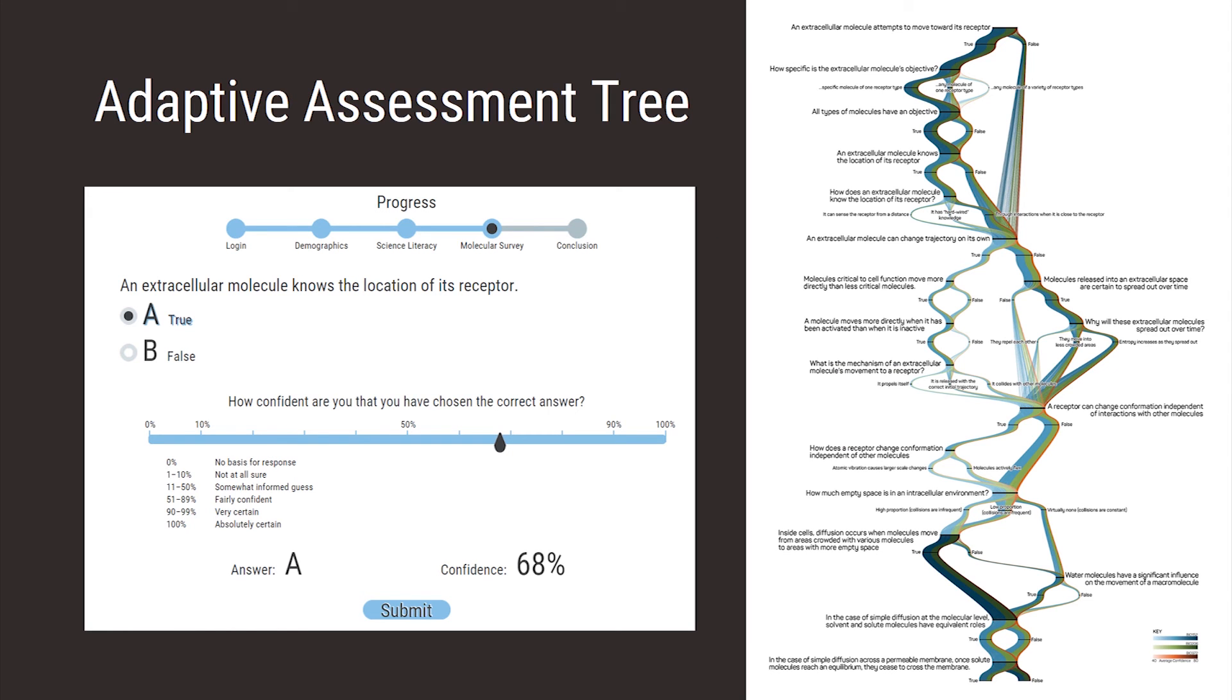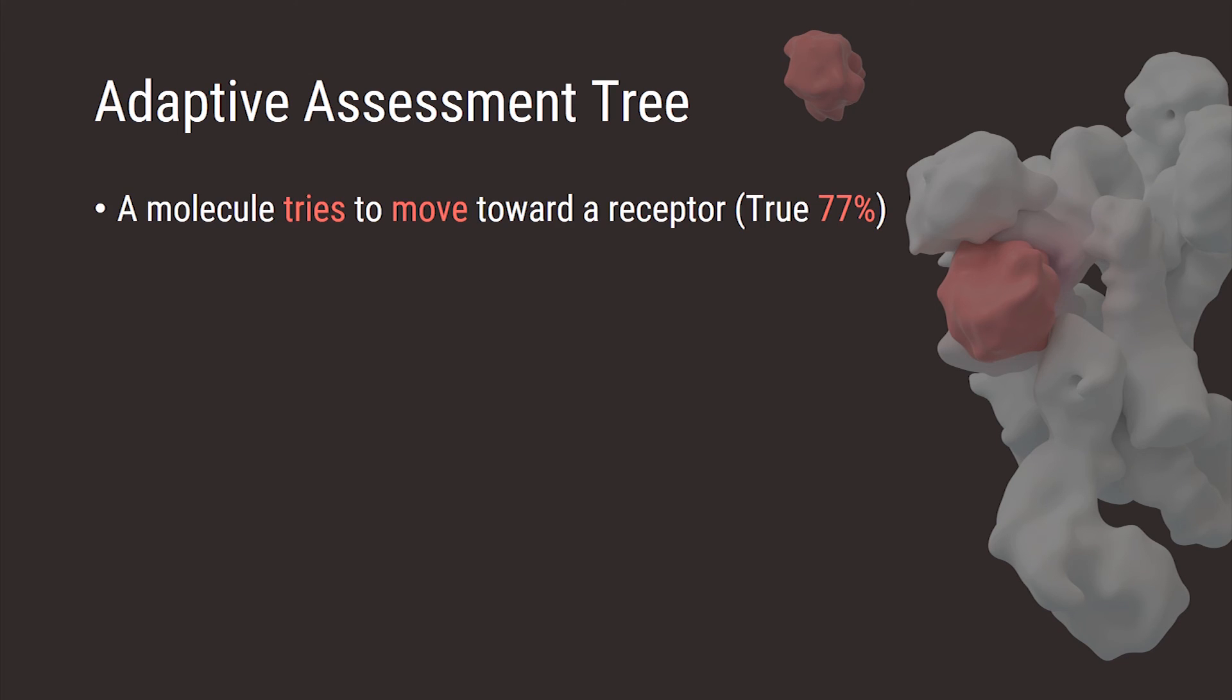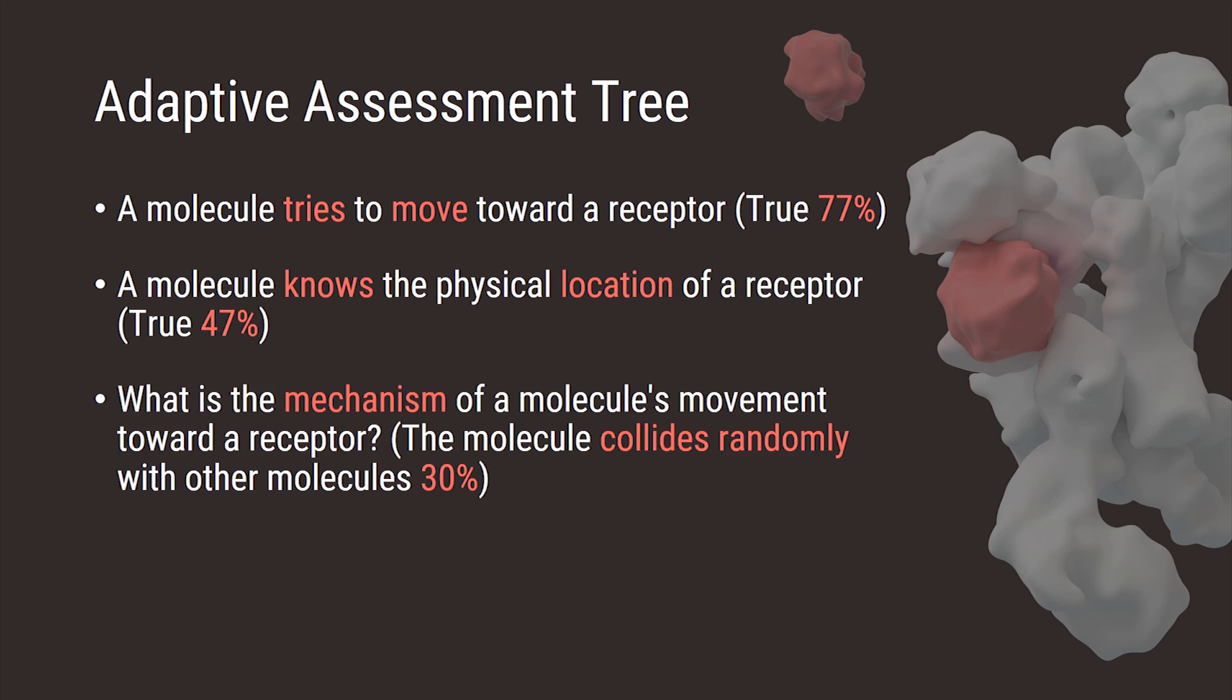We've also surveyed large numbers of undergraduate students with the aim of parsing out their individual ideas and misconceptions regarding molecular processes. I just want to share a few numbers from that survey. Over 75 percent of participants said that molecules try to move toward their binding partners, which isn't true. Almost half of students said that a ligand somehow knows where its receptor is, which isn't true. And less than a third said that the mechanism by which molecules move around is through random collisions with other molecules, and this is the most correct out of the available options. So these numbers indicate to me that most students are not thinking about random Brownian motion when they imagine cellular processes.